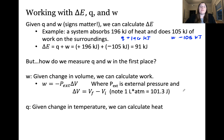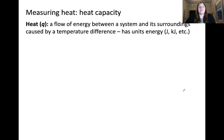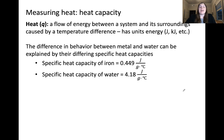Measuring heat is a little more complicated. If we know the change in temperature and the substance being studied, it is possible to calculate heat. Consider heating a metal pan filled with water on the stove — if you have the same mass of metal and the same mass of water, which will heat up first, the metal or the water? We know from experience that the metal heats up first. Revisiting heat as the flow of energy based on a temperature difference, we can determine the heat capacity. The difference in behavior between metal and water can be explained by their differing heat capacities.